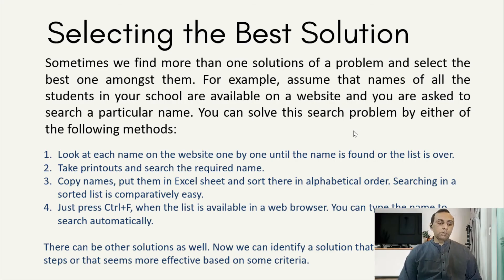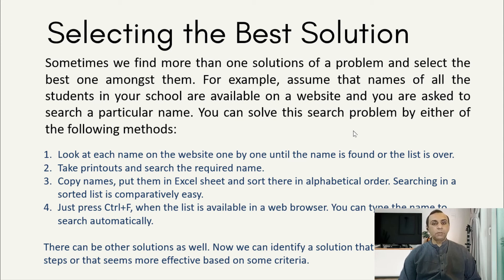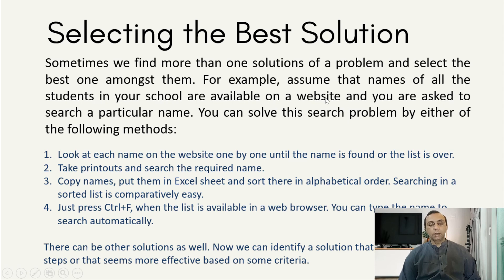Next, we are going to discuss selecting the best solution. There are many criteria for selecting the best solution — if you want to save time and cost, then you have to choose the best solution. For example, assume that all student names in your school are available on a website and you are asked to search for a particular name. You can solve this search problem by any of the following 4 methods.